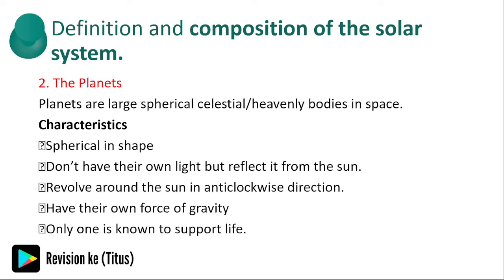The planets are large spherical celestial heavenly bodies in space. Their characteristics: they are spherical in shape, they don't have their own light but reflect light from the sun, they revolve around the sun in an anticlockwise direction, they have their own force of gravity, and only one is known to support life — and that is the earth.